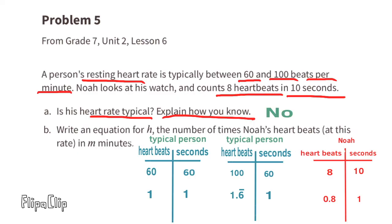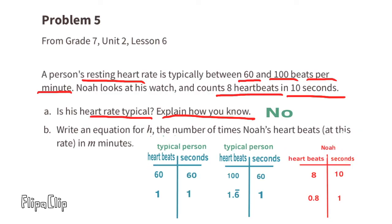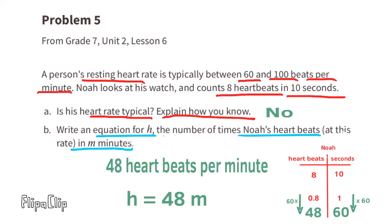Part b: Write an equation for h, the number of times Noah's heart beats at this rate in m minutes. We can multiply 1 times 60 to make 60 seconds, which is equal to one minute. When we do that, we need to multiply the left column (heartbeats) by 60, so 0.8 times 60—that equals 48. So Noah's resting heart rate is 48 beats per minute.